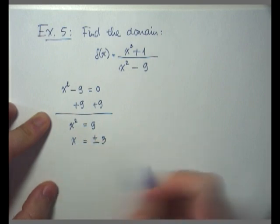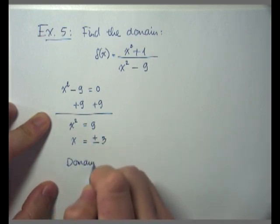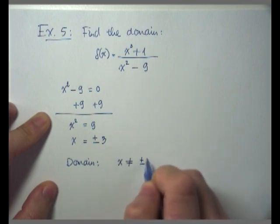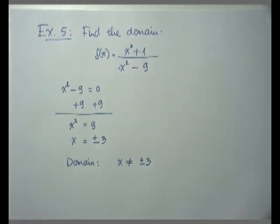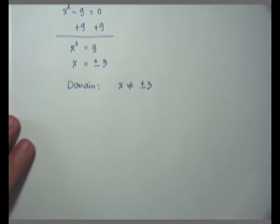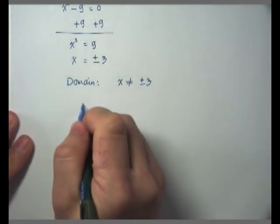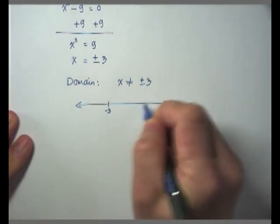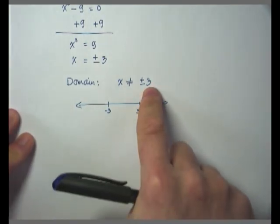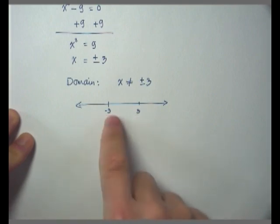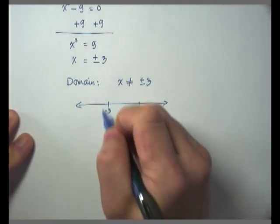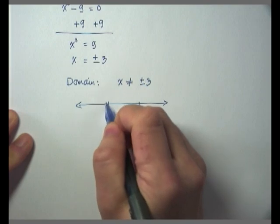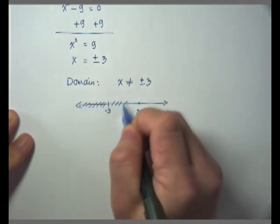To finalize the domain, the domain is going to be any x value except positive and negative 3. Now we need to re-express the domain in interval notation. The best way is to draw yourself a number line, with negative 3 and positive 3 placed in increasing order from left to right. The logic is saying that I want any x value except 3 and negative 3.